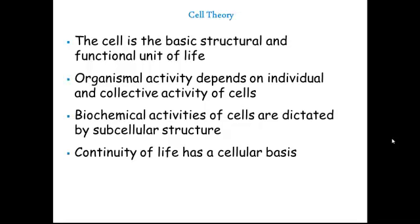What this means is that all life arises from pre-existing cells. In terms of humans, human adults produce sperm and eggs. Those sperm and eggs are living cells. The sperm and egg come together and fuse to create new cells, which then result in a new organism. So that is the continuity of life.